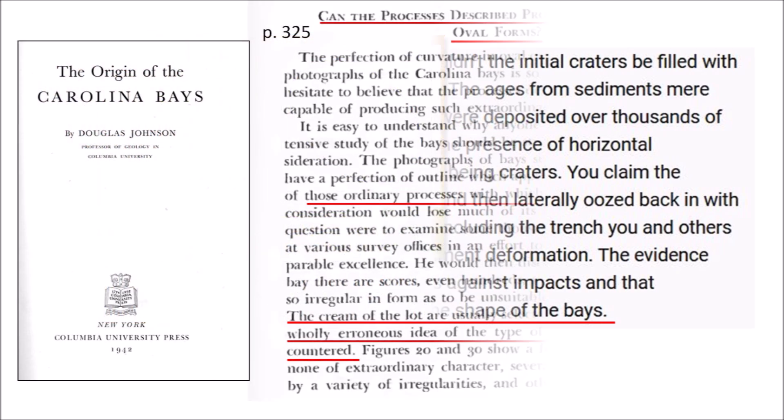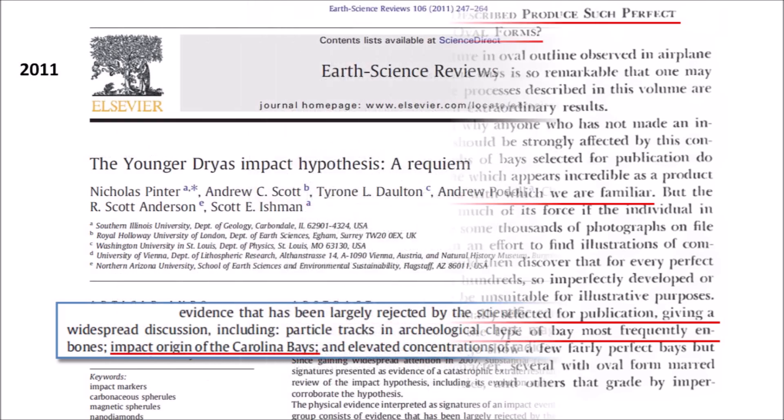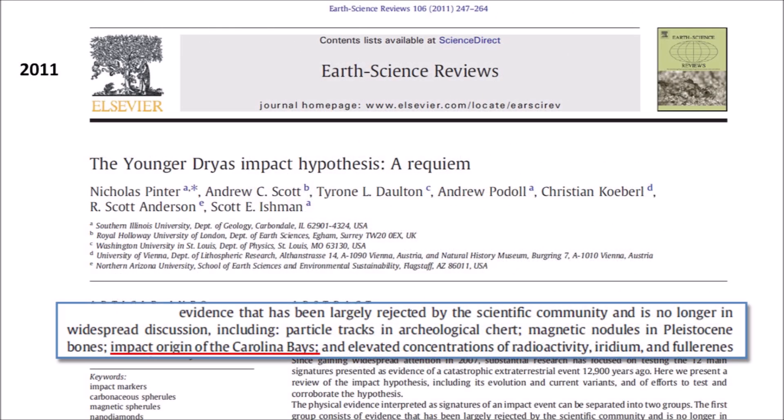The refusal to consider the geometry of the Carolina Bays is not new. The 1942 book by Professor Douglas Johnson from Columbia University asked: can the processes described produce such perfect oval forms? He was referring to ordinary processes like wind and water mechanisms. Johnson claims that images selected for publication are specifically chosen for their regularity, and that there are many irregular bays. But Johnson was only working with aerial images — he did not have LiDAR images or a program to test elliptical geometry by the least squares method. After the publication of the Younger Dryas impact hypothesis by Firestone in 2007, many scientists wrote articles to oppose it. The Requiem paper said all physical evidence interpreted as signatures of an impact event has been largely rejected by the scientific community, including the impact origin of the Carolina Bays, creating great bias against research on the topic.